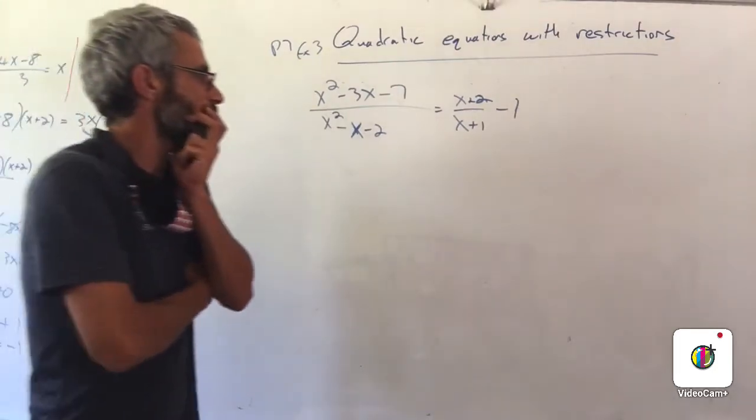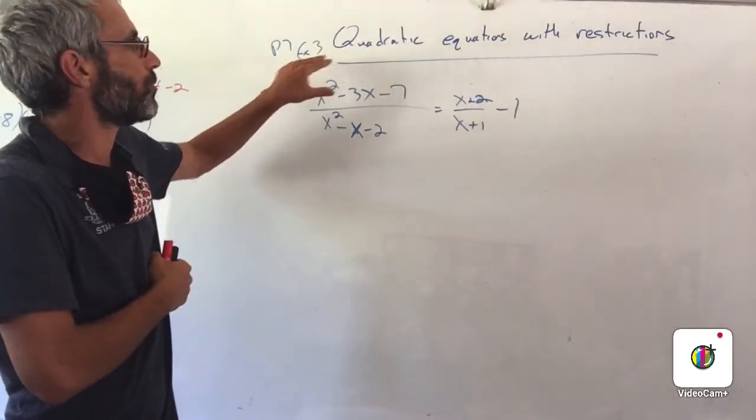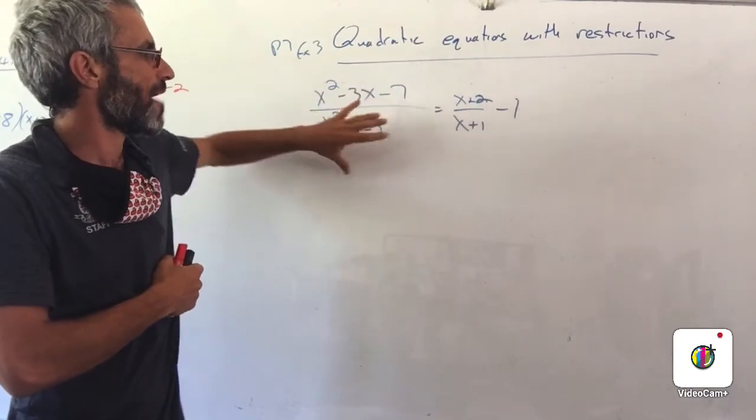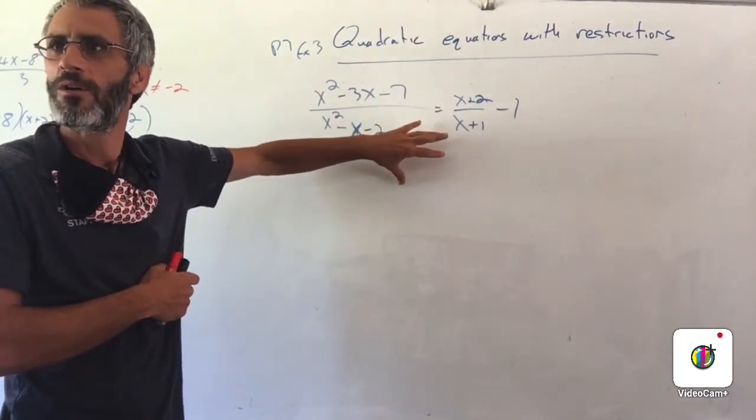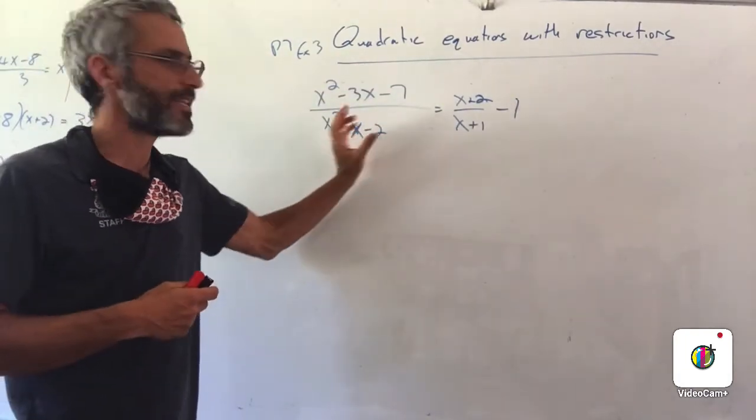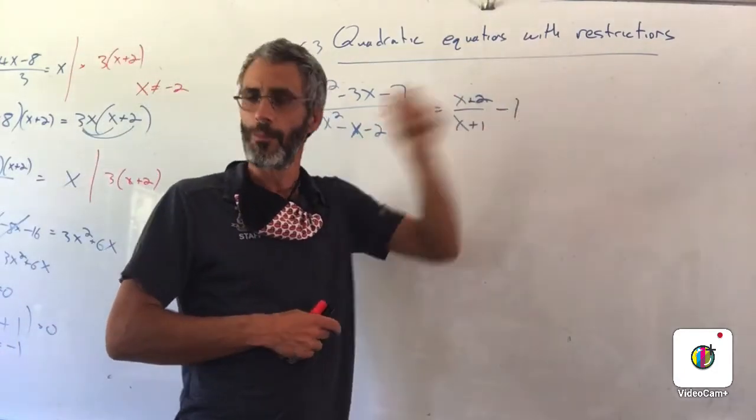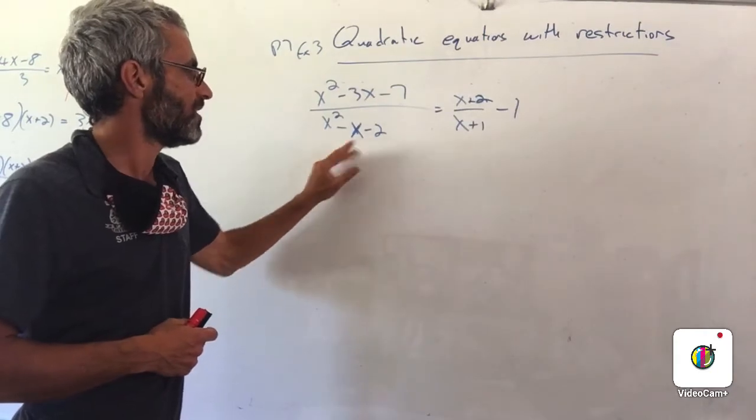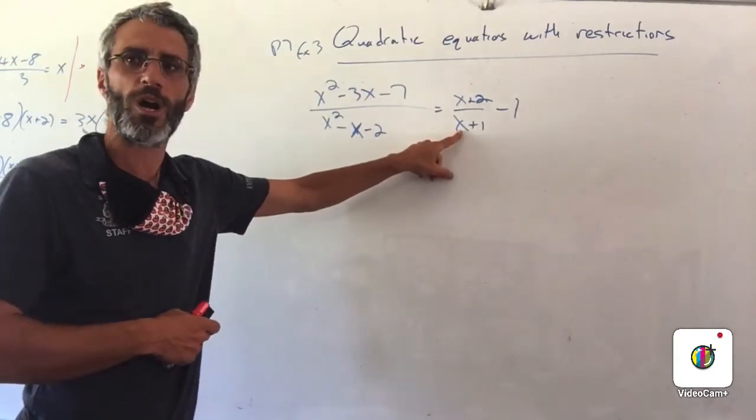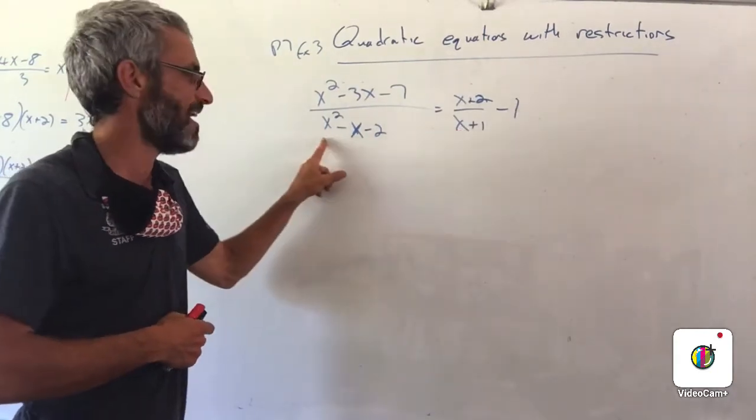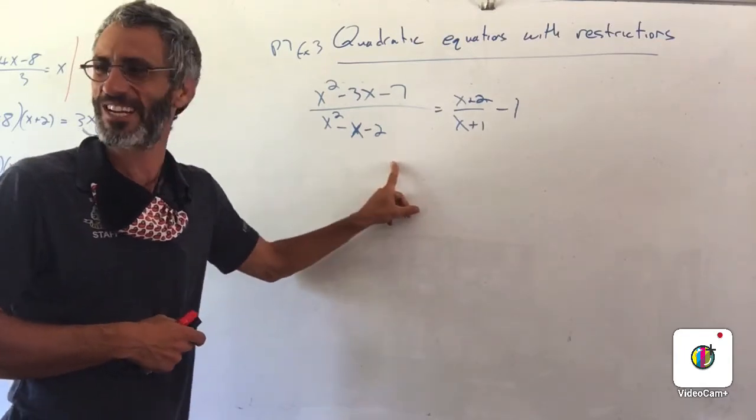Right guys, so this is a continuation really from last lesson. We're still working with quadratic equations that have fractions inside them, and not just fractions, there's x in the denominator. So that means we have to write a restriction. But as you can see now, it's a bit more complicated. Where before I had just like x plus 1, x minus 2, now I have a quadratic equation in the fraction.